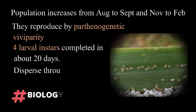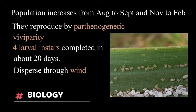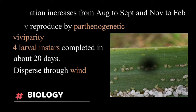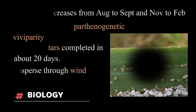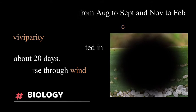Biology: sugarcane woolly aphid population increases from August to September and November to February. They multiply by parthenogenic viviparity in a short period of time. There are four larval instars which are completed in about 20 days.